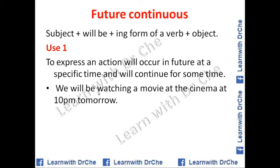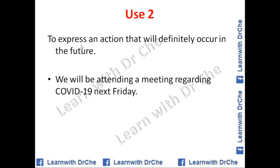For example: I will be watching a movie at the cinema at 10 p.m. tomorrow. At 10 p.m. tomorrow there will be an activity that will be occurring. Use number two: to express an action that will definitely occur in the future. For example: We will be attending a meeting regarding COVID-19 next Friday.